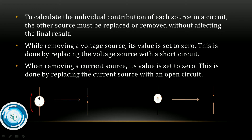We will remove the current source. When you remove the current source, the internal resistance value is set to infinity, and this is done by replacing the current source with an open circuit. We will consider one open circuit. The voltage source has no internal resistance value; for the current source, we will open it.